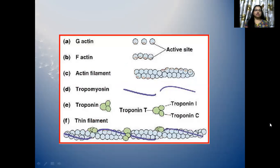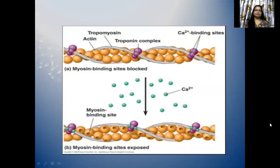There is G-actin and F-actin which is polymer of G-actin. Then F-actin forms actin filament and there is tropomyosin filament. Tropomyosin with three subunits — I, T and C. And there are myosin binding sites in blocked and exposed conditions, and calcium binding sites.